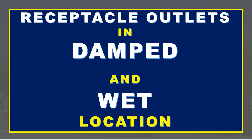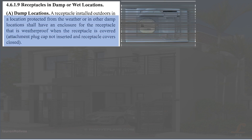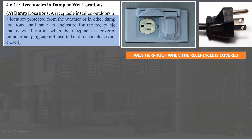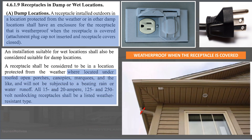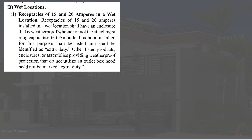In Section 4.6.1.9, a receptacle installed outdoors in a location protected from the weather or in other damp locations shall have an enclosure for the receptacle that is weatherproof when the receptacle is covered. A receptacle shall be considered to be in a location protected from the weather where located under roofed open porches, canopies, marquees, and the like, and will not be subjected to beating rain or water runoff. All 15 and 20 ampere, 125 and 250 volt non-locking receptacles shall be a listed weather resistant type.